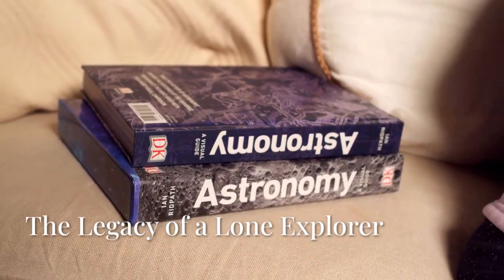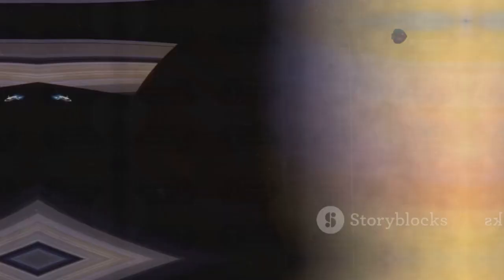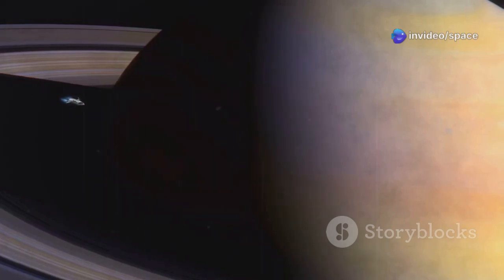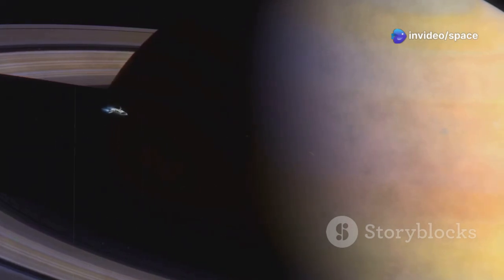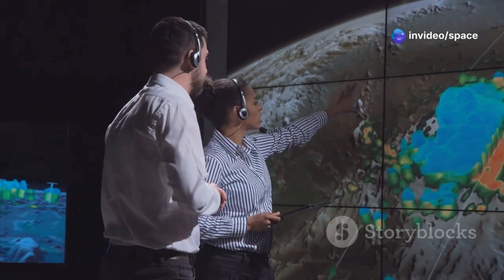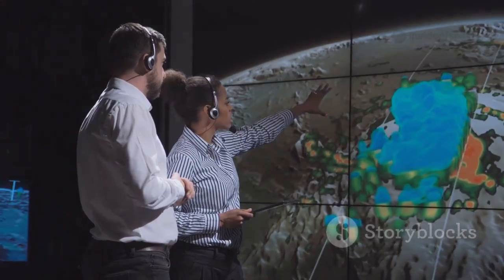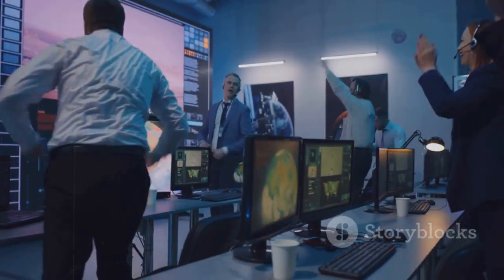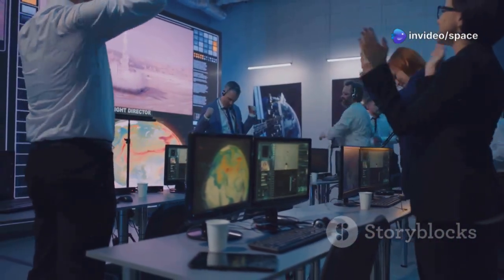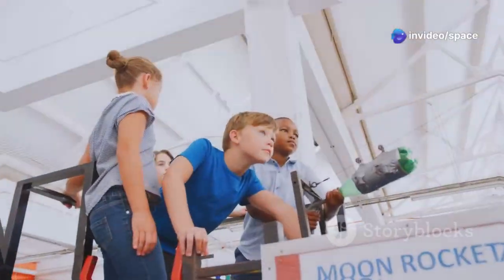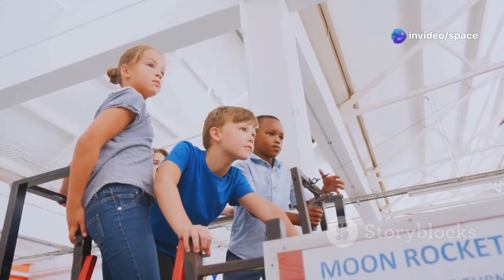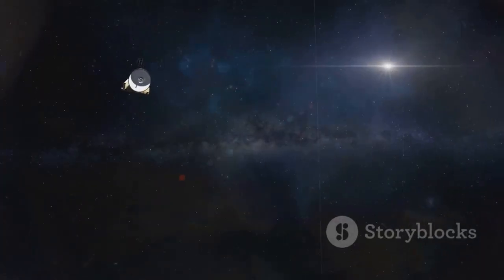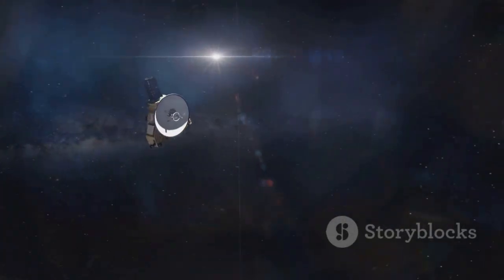Voyager 2's legacy is written in every modern astronomy textbook. It transformed the outer planets from faint points of light into dynamic, complex worlds. Its data gave us our first direct measurements of the heliosphere's edge and interstellar space. The mission drove technological innovation, decades of operation, self-navigation and communication across billions of miles. It inspired generations of scientists, engineers and dreamers.